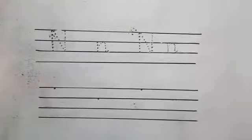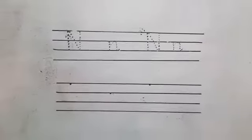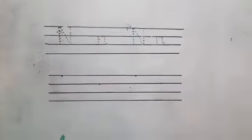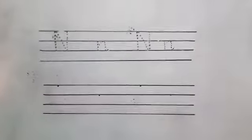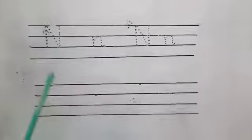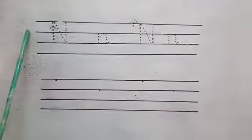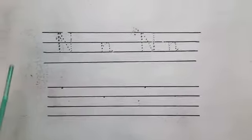So today I will tell you how many lines are in our English activity book. Four lines. How many lines? Four lines. Come with me — one, two, three, four. Very good.